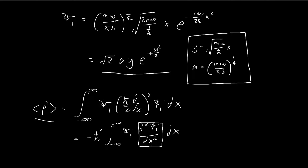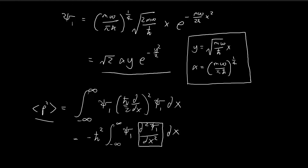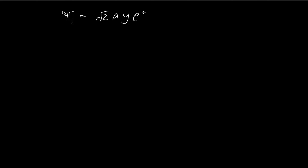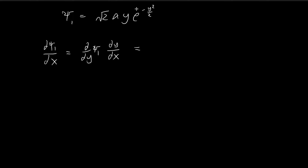Our problem really just descends into a rather mundane task of doing differentiation. Let us focus on trying to find this term. Our ξ₁ is going to be equal to this expression, and then we're going to take the second derivative of ξ₁. To find the second derivative, let's find the first derivative first. We can apply the chain rule — because everything here is in terms of y, it would be more convenient to use the chain rule. So we differentiate this in terms of y, then multiply by dy/dx.